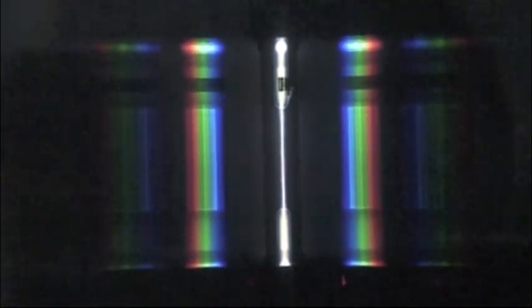A diffraction gradient is used to split the light into its discrete lines in the emission spectrum. Each line corresponds to one exact frequency of light emitted by the atom of xenon.